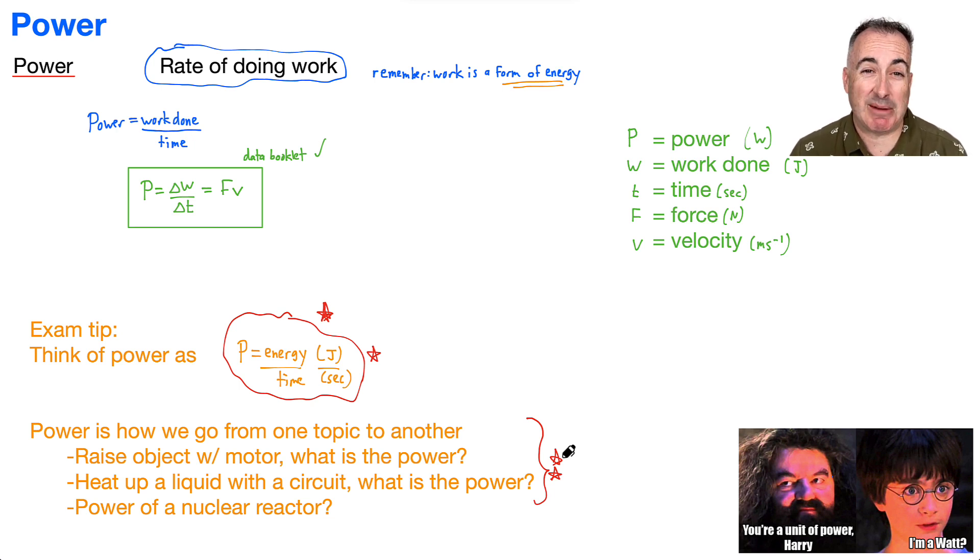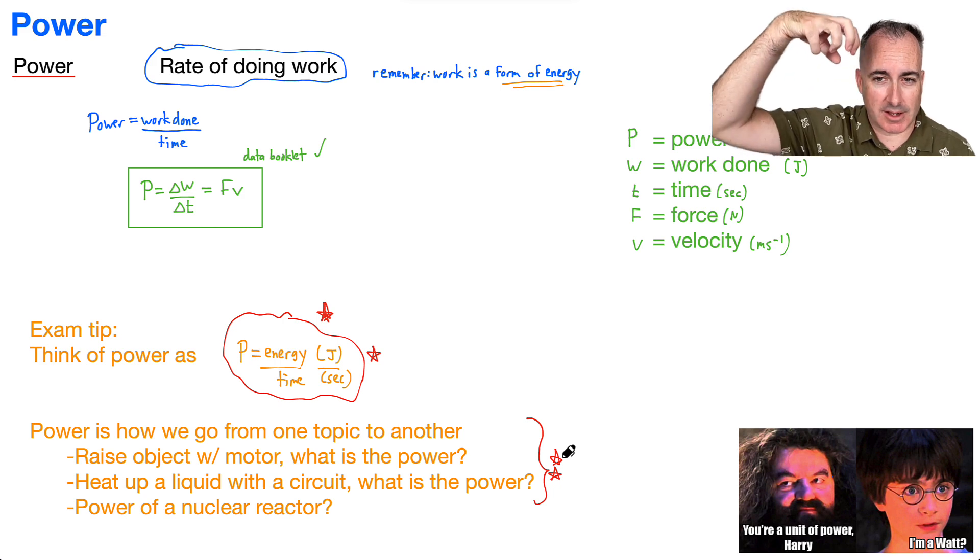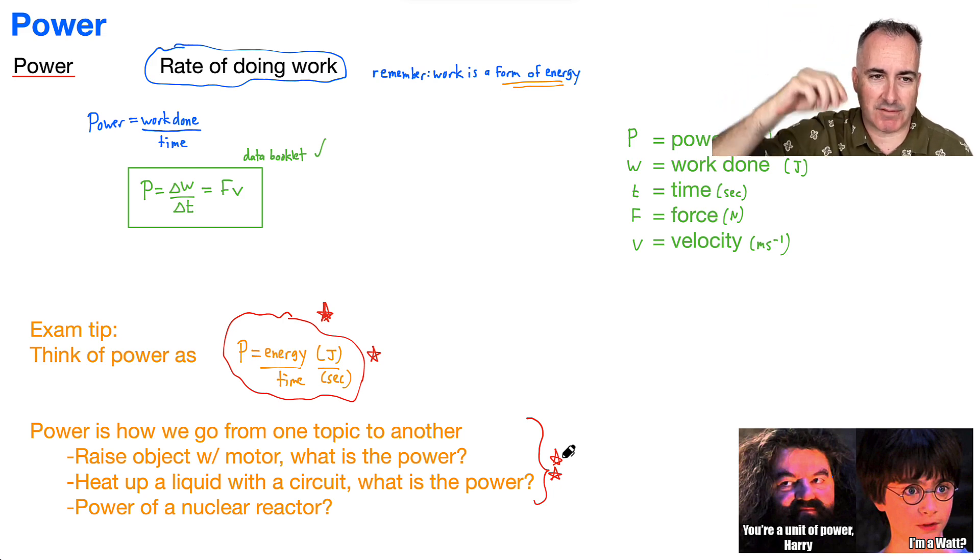So in other words, if you're going to consider something like in mechanics, let's say you take some object and you raise it up, that's some sort of mechanics type stuff. When you're raising it up, there's gravitational potential energy. And anytime you have energy over time, you have power. So for example, if you're raising an object with a motor, that's going to be the power of the motor.